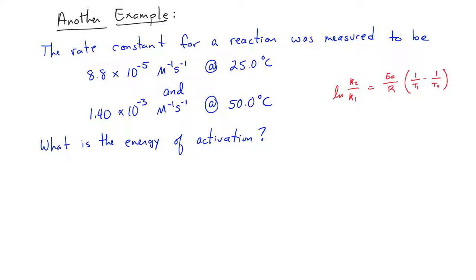To solve this one, we are going to use the form of the equation that contains two rate constants and two temperatures, and we are going to solve it for the Ea. Next, we are going to plug in the variables and get the answer. In this case, we can make 8.8 times 10 to the minus 5 be K1, and 25 degrees Celsius be T1, and we'll make the other set of conditions K2 and T2.